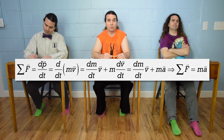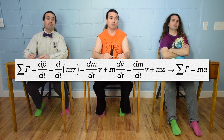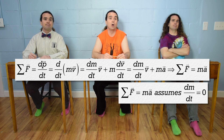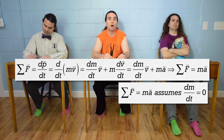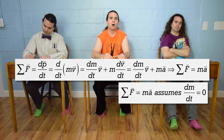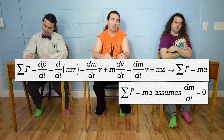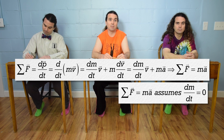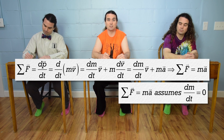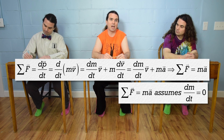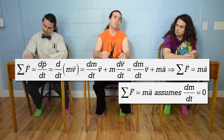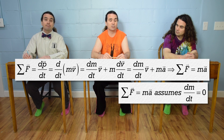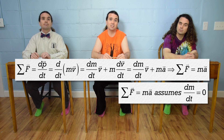That would mean the derivative of mass with respect to time was zero — which means the mass of the object is not changing. Net force equals mass times acceleration assumes the mass of the object is constant.